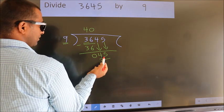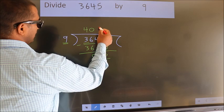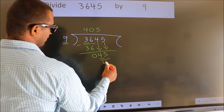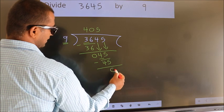So 45. When do we get 45 in the 9 table? 9 times 5 is 45. Now we subtract. We get 0.